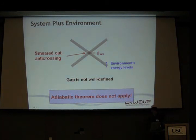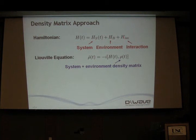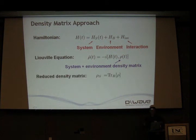So how can we describe the system in such a case? As I mentioned, I will tell you two methods. One of them is the density matrix approach. I write the Hamiltonian as system Hamiltonian plus environment plus interaction, completely generally. I introduce the density matrix for system plus environment, and this is the general evolution equation for the density matrix. Since I'm not interested in the environment but only in the system, I trace out the environmental degrees of freedom and introduce the reduced density matrix.